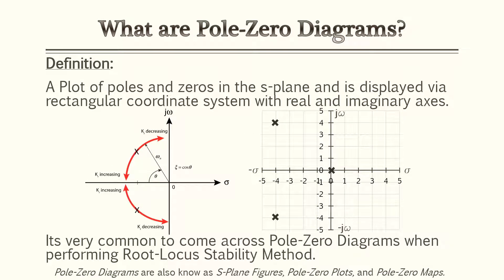For this lesson we'll be focusing on pole-zero diagrams. Pole-zero diagrams are a plot of poles and zeros in the s-plane, displayed via a rectangular coordinate system with real and imaginary axes. It's very common to see these diagrams in the Root Locus stability methods, also known as Root Locus diagrams.